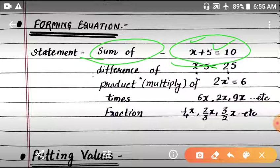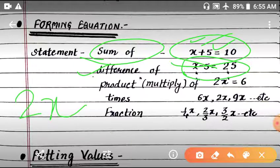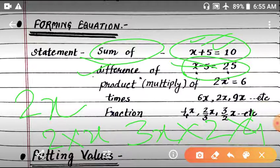If you have statements with sum of two numbers, you add them. If difference is given, then you find the difference between them. You put equal sign and write the result. Similarly, if product or multiply is written, product of two numbers, then you multiply.